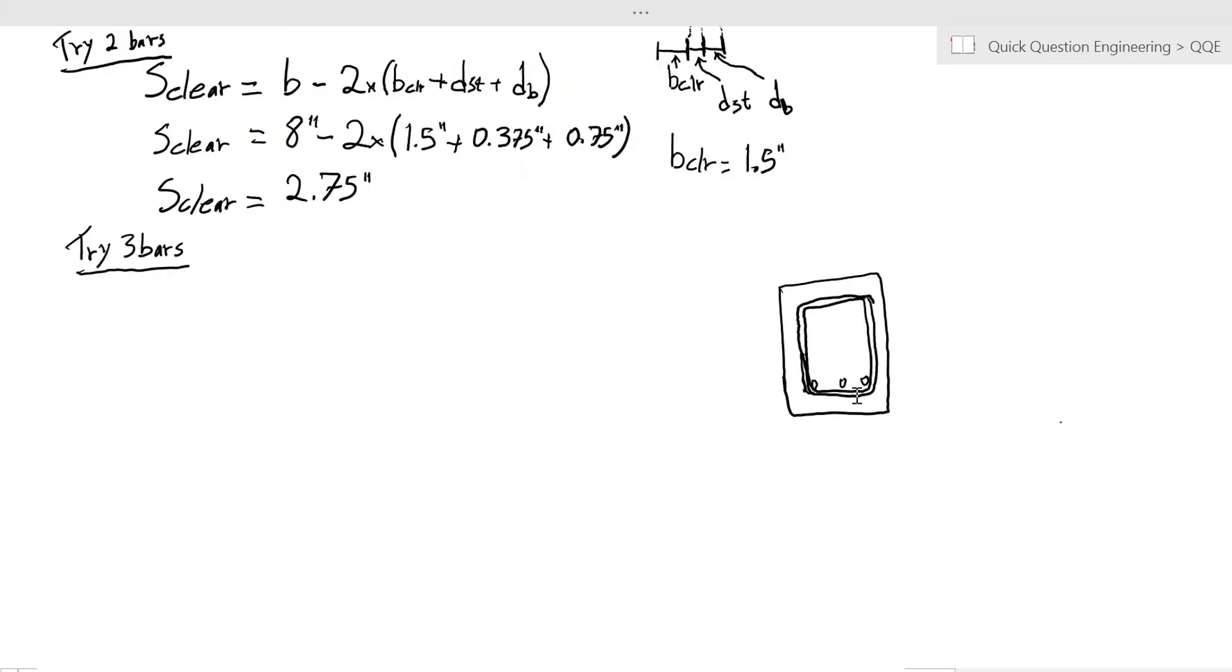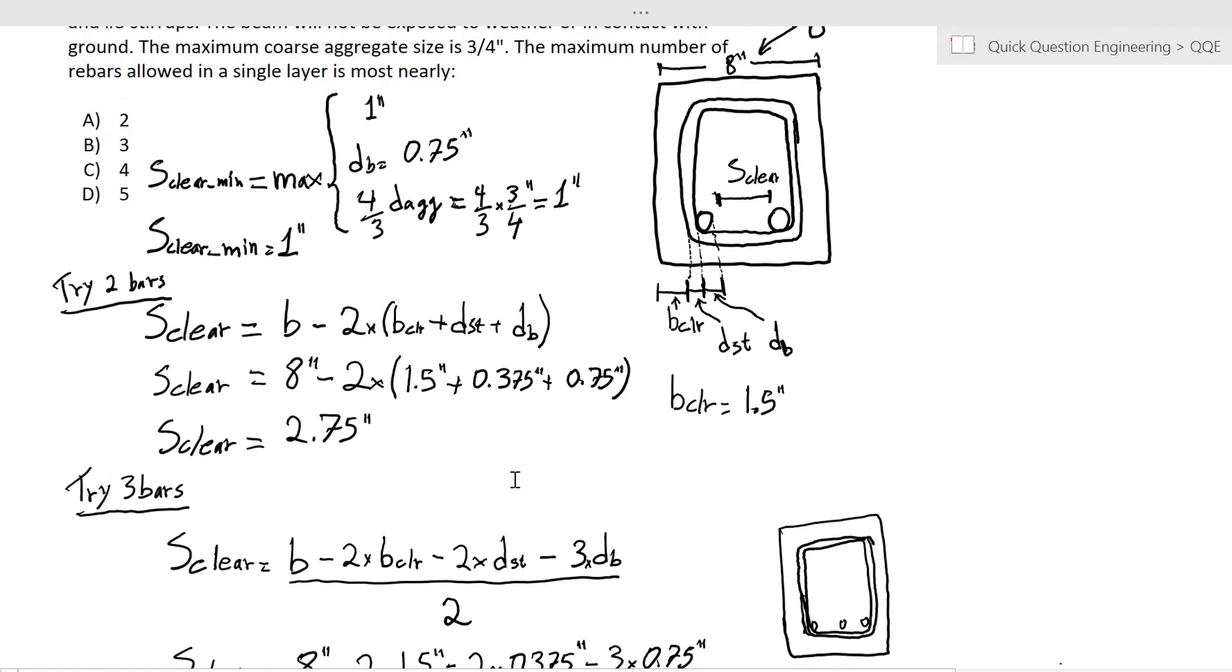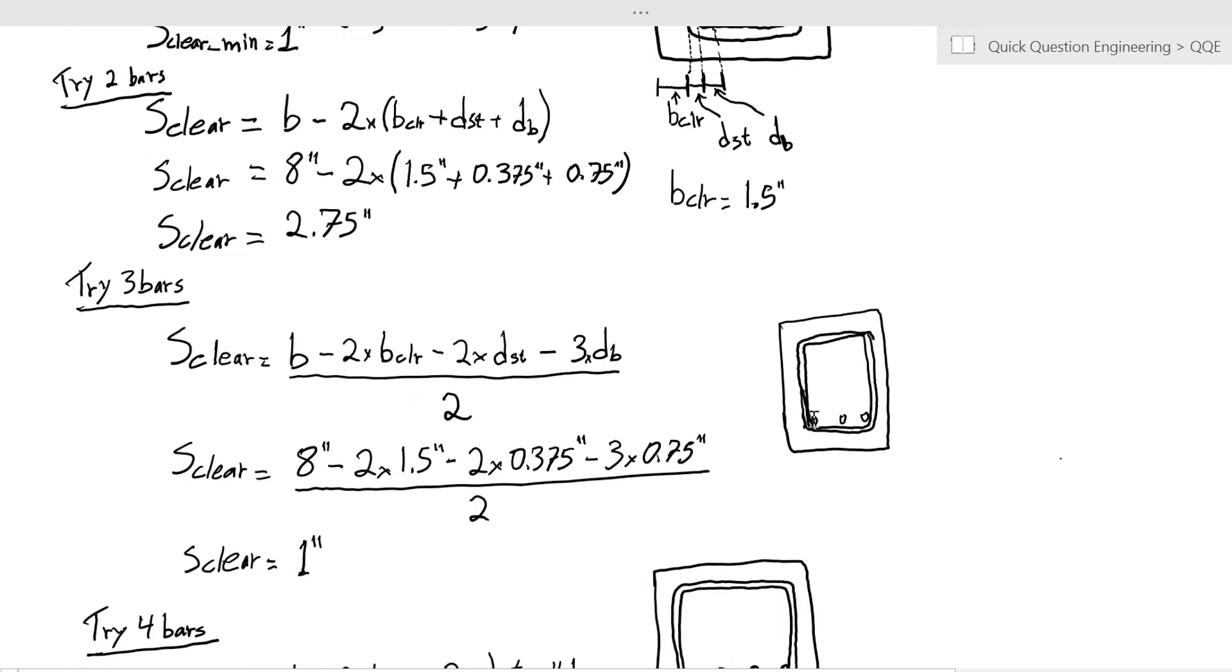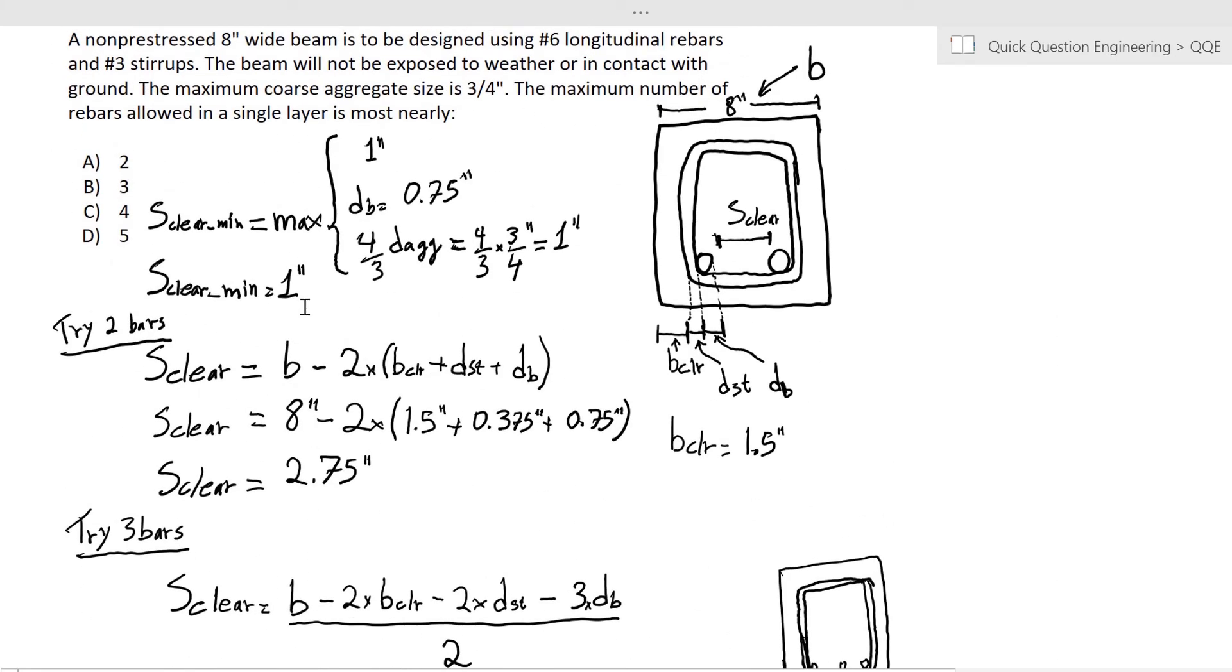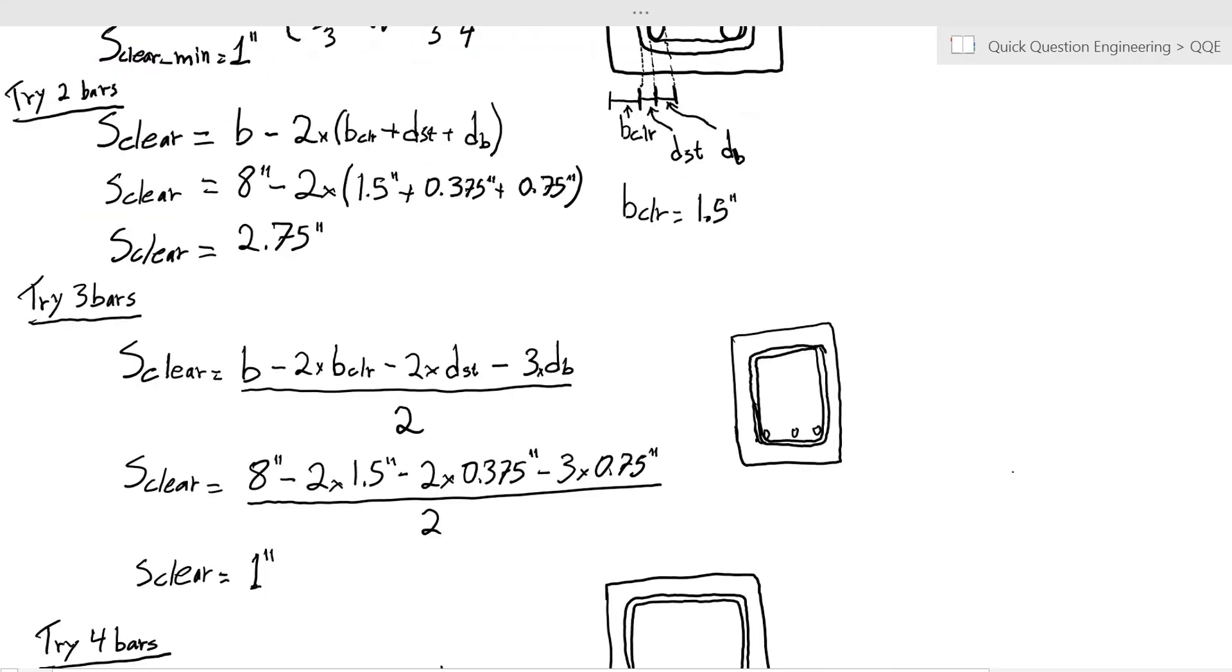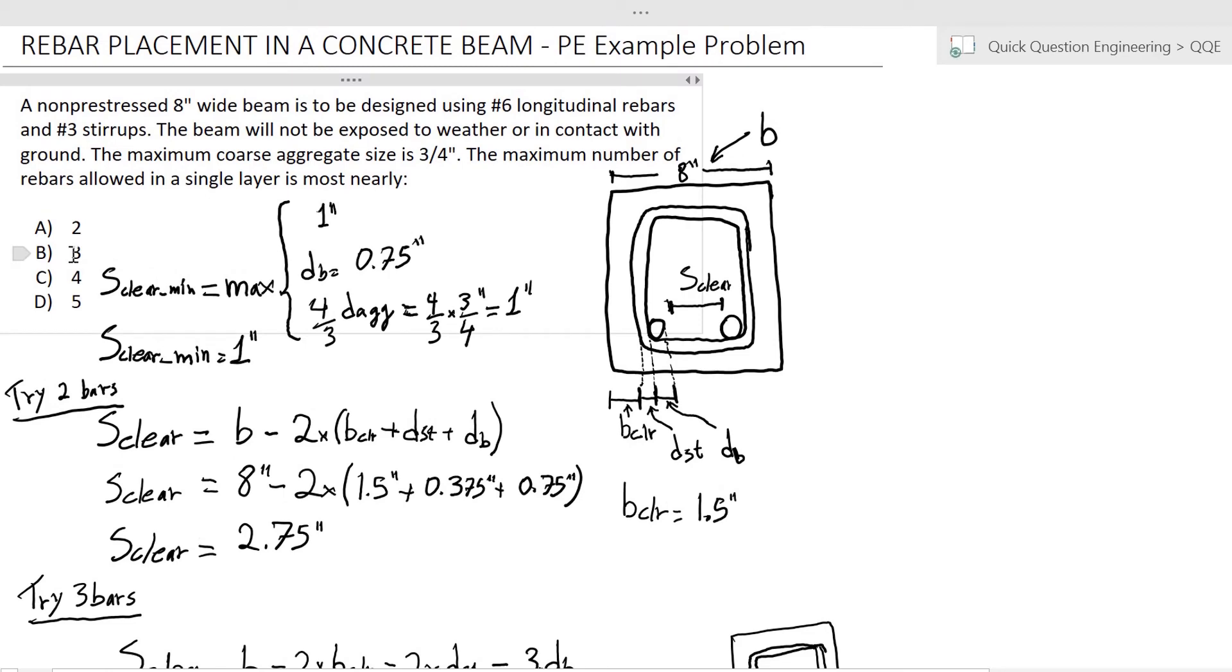So if we have three rebars now, our formula changes slightly just because now we have to be subtracting three diameters of the rebars instead of only two as in the previous formula. So I split this formula up here to get the dimension between the inside face of the stirrup to the inside face of the other stirrup, and then minus the three diameters because we're using three rebars, and divide all of that by two because there are two spaces here. And we get that spacing as one inch, which is the exact minimum clear spacing between rebars. So we know that the answer for our problem will be letter B, which is three rebars.